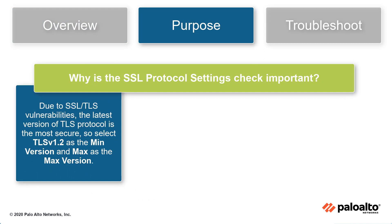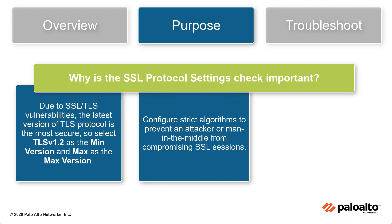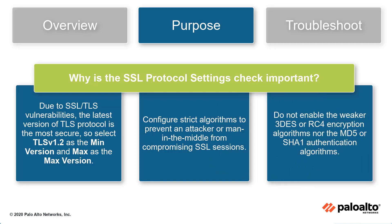Due to SSL/TLS vulnerabilities, the latest version of TLS protocol is the most secure, so select TLS v1.2 as the minimum version and max as the maximum version to ensure that the firewall uses the newest available version of TLS. Configure strict algorithms to prevent an attacker or man-in-the-middle from compromising SSL sessions. Don't enable the weak 3DES or RC4 encryption algorithms, and don't enable the MD5 or SHA-1 authentication algorithms.